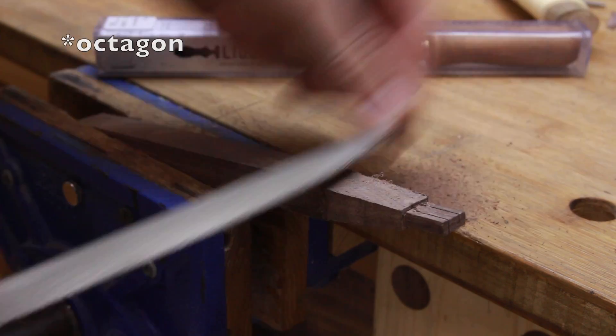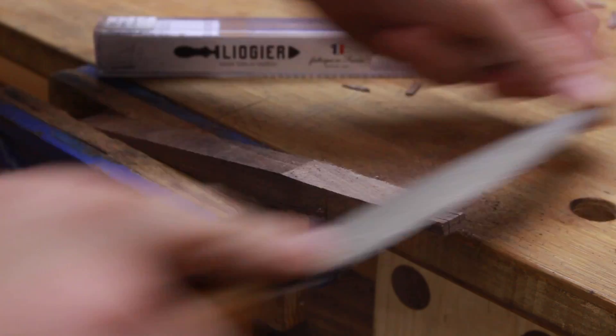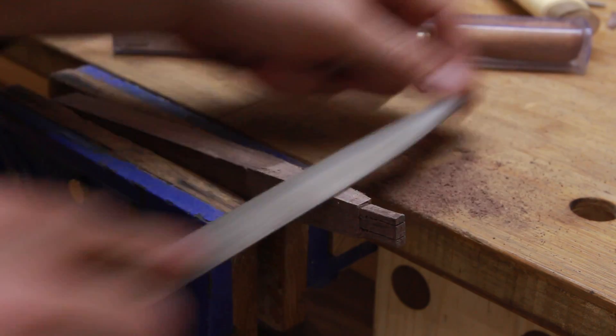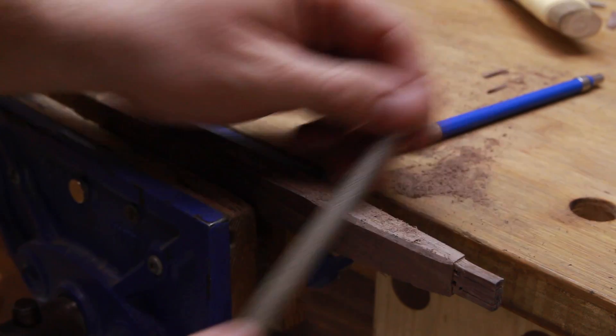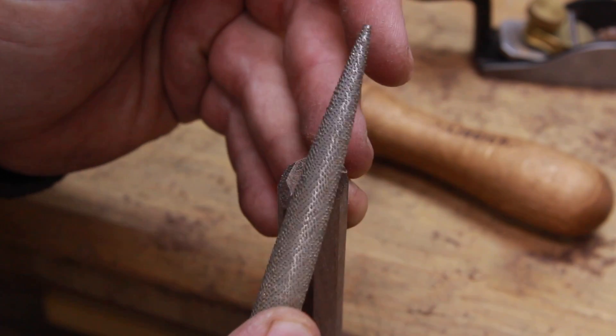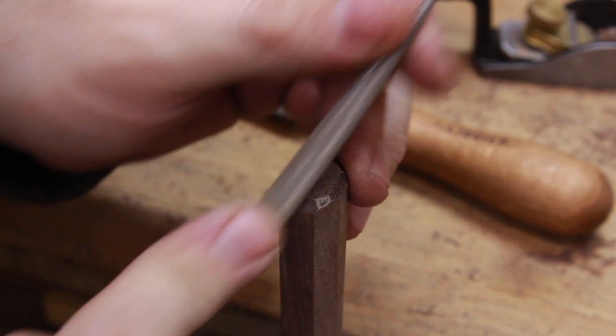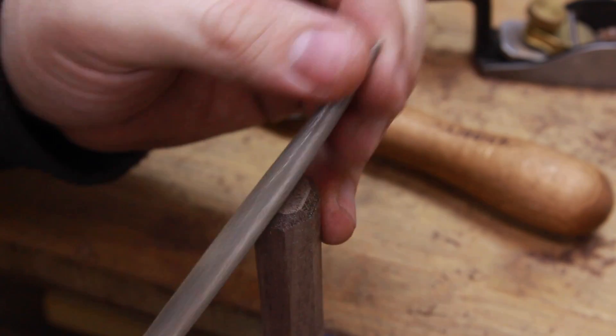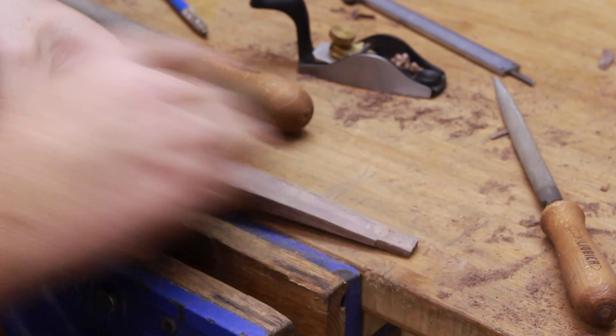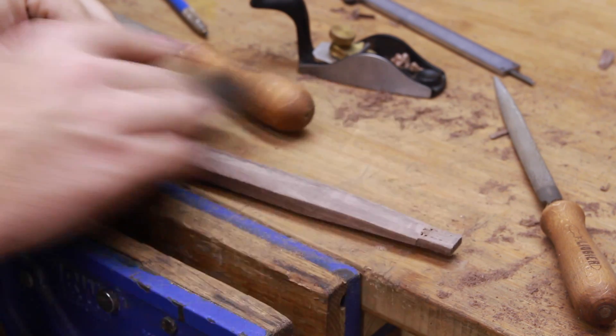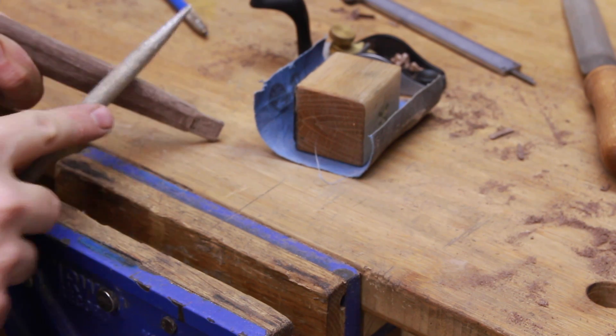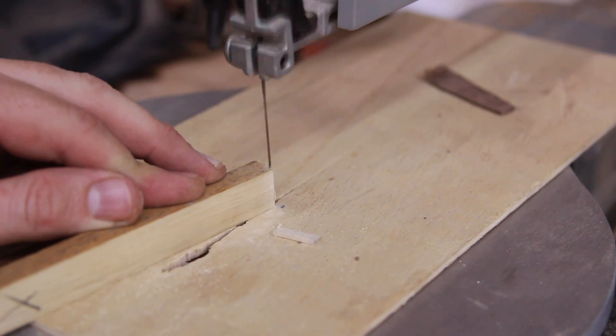I shaped the handle to hexagon using fantastic Logier hand-stitched rasps. They're expensive, but they're really worth every penny. I love using them. The finish is incredible from the files, and I had to just sand lightly at the end.